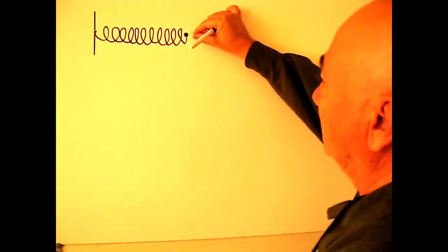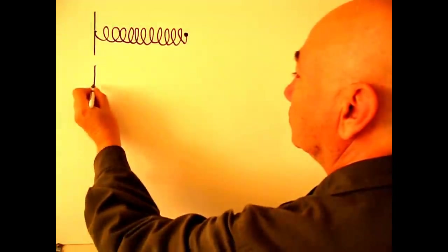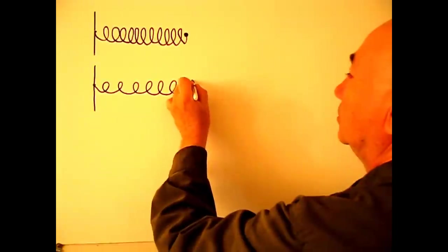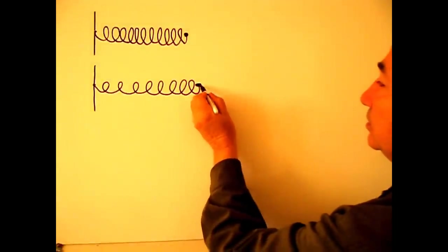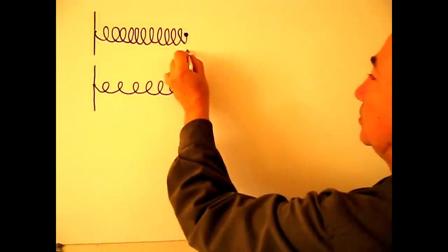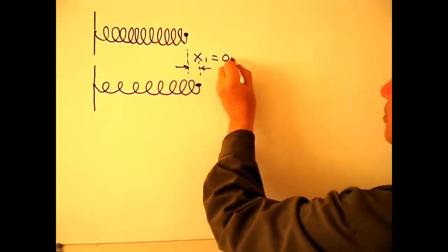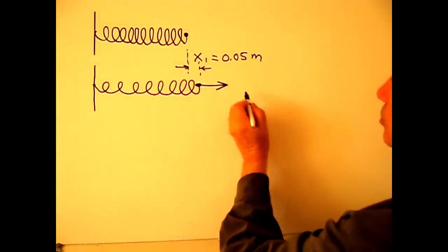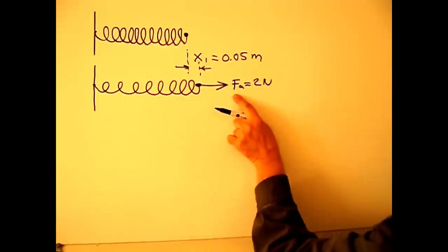Let's say I applied a force of 2 newtons to the right. I stretch the spring. The length of the spring will be increased and this point goes to the right. The displacement of this point, if we call it x1, is 0.05 meters or 5 cm. This is the force, FA, 2 newtons, the applied force applied to the spring.